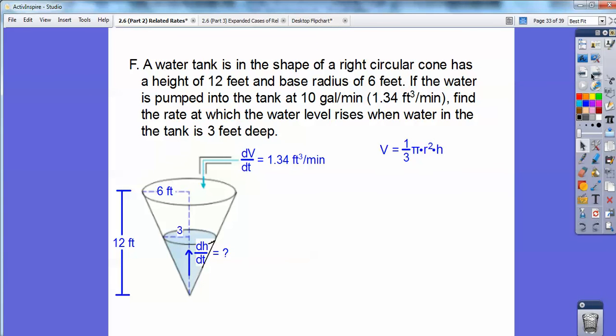Now I have too many variables happening in here. I got an R squared. Let's eliminate a variable. Check this out. The radius is 6 and the height is 12. So the radius is 1 half the height right there.